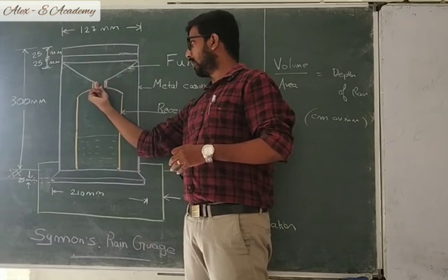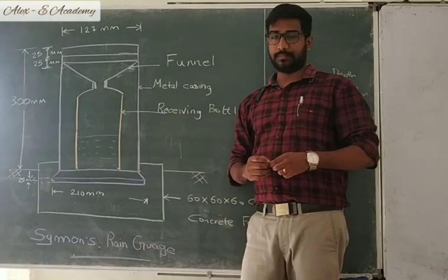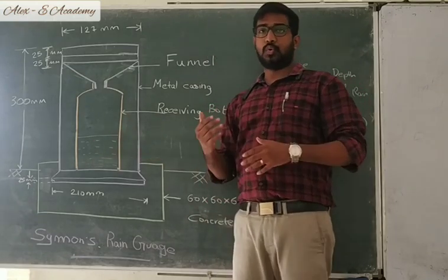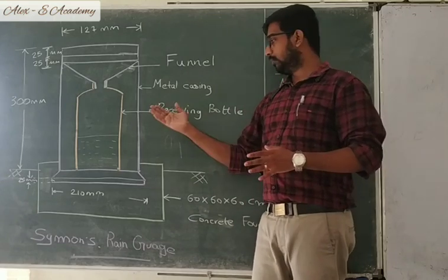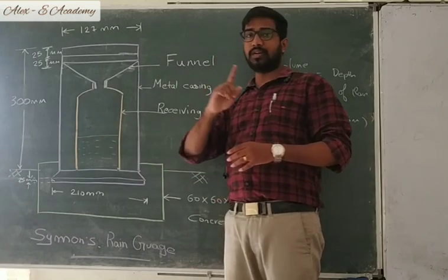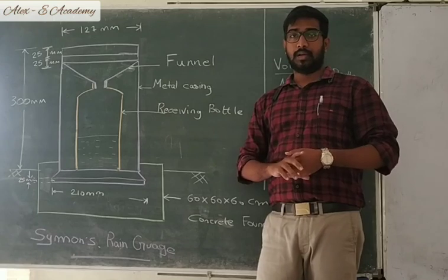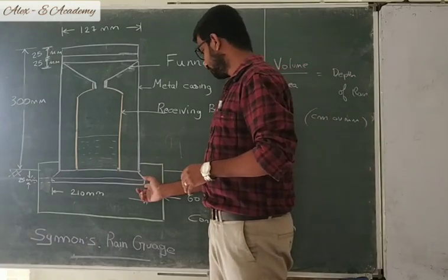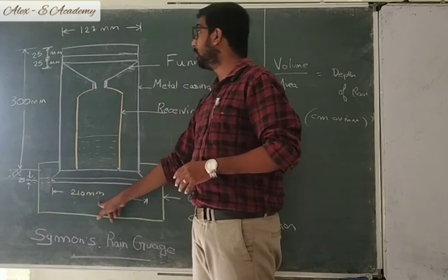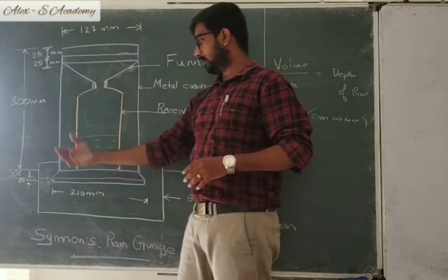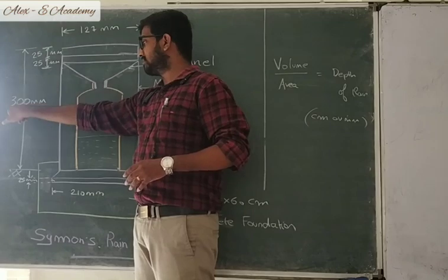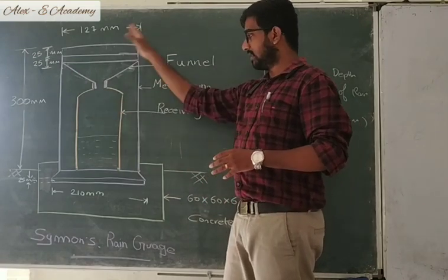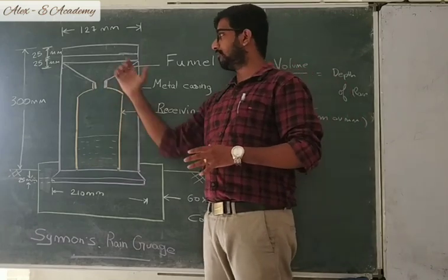Let's see the working. When rainfall occurs, it will be collected by this receiving funnel. This receiving funnel is connected through a nozzle to the top of the receiving bottle, and through this funnel the rain will get collected inside the receiving bottle. If the rainfall is very heavy, we will measure this receiving bottle two or three times a day. Normally, we collect this rainfall only once a day, at 8:30 AM in the morning. The bottom diameter of the casing is 210 mm and the top diameter is 127 mm. The height of the rain gauge from ground level to the top is 300 mm, and the cap of the casing is 25 mm. The metal casing is provided to protect the bottle and funnel from external forces.